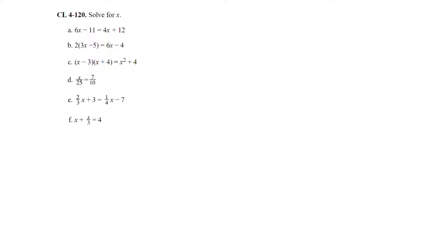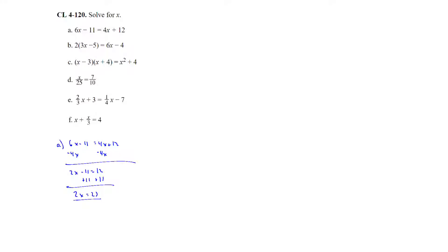Question 120: solve for x — different types of equations. For part a, 6x minus 11 equals 4x plus 12. Subtracting 4x and adding 11 to both sides gives 2x equals 23, so x equals 23 halves.